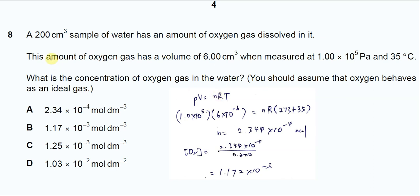Question number 8. 200 cm³ of water has oxygen dissolved in it. Given oxygen's volume is 6 cm³, pressure and temperature is given. What is the concentration of oxygen gas in this water?